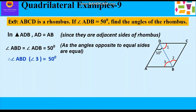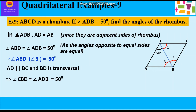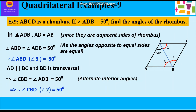Since ABCD is a rhombus, opposite sides are parallel: AD is parallel to BC, and BD is the transversal. Therefore angle CBD = angle ADB = 50°, as they are alternate interior angles. So angle CBD, which is angle 2, is 50°.